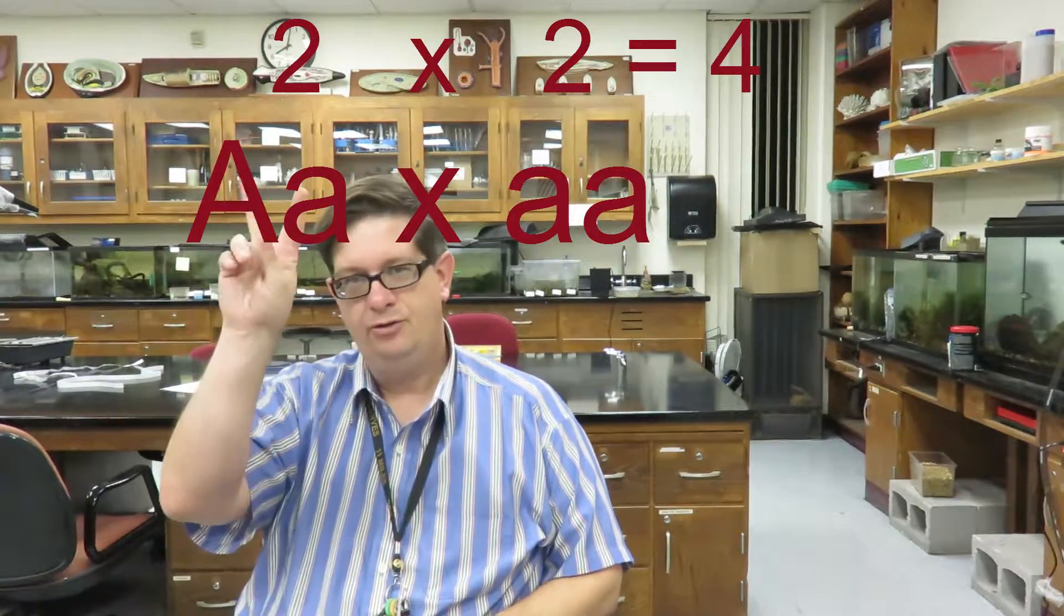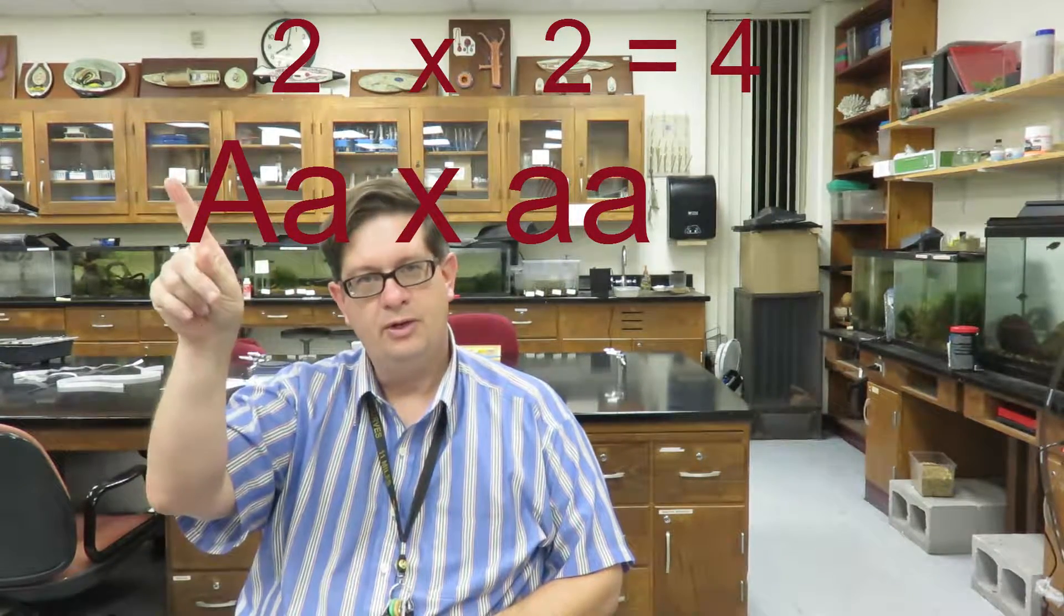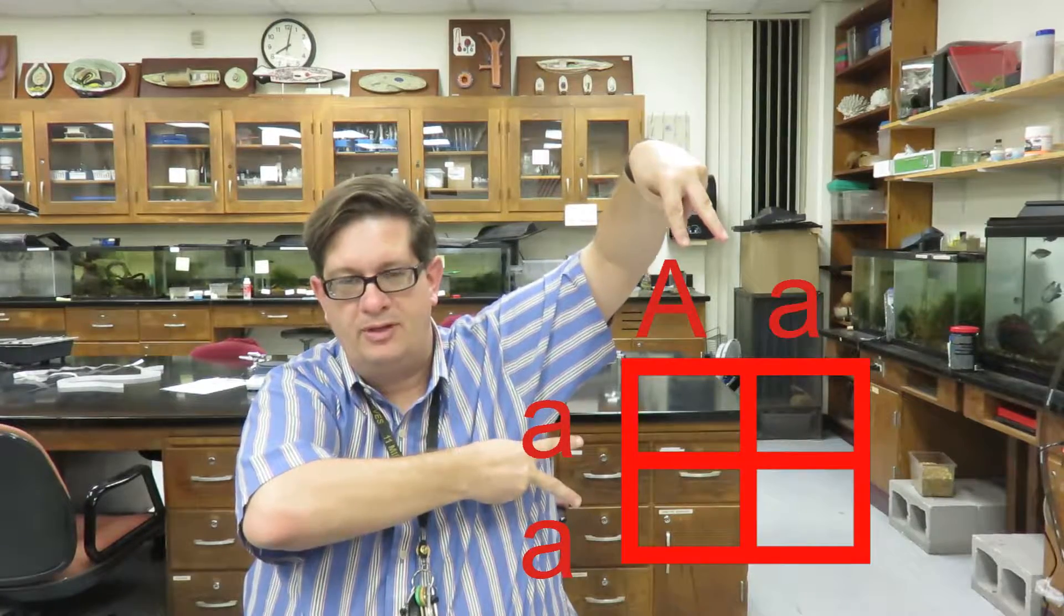If you have one gene, you have two copies of it, one on each chromosome. You can give either this one or that one. That's why one gene is a 4 square Punnett square. Two options for the father, two options for the mother.